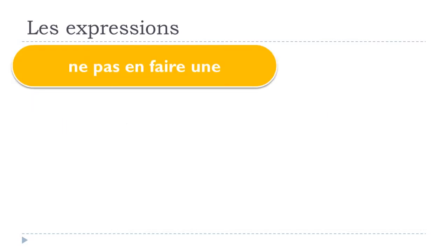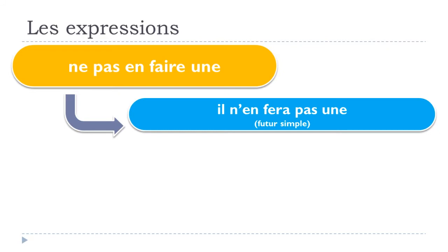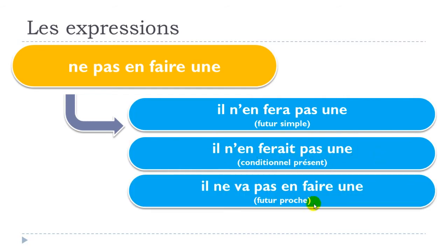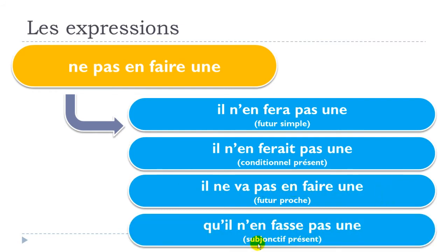Now let's see how you would conjugate this expression at different tenses. Future simple: il n'en fera pas une. Conditionnel présent: il n'en ferait pas une. Future proche: il ne va pas en faire une. Subjonctif présent: qu'il n'en fasse pas une.